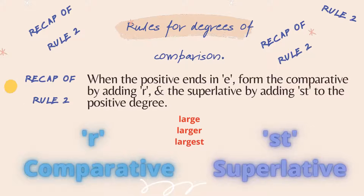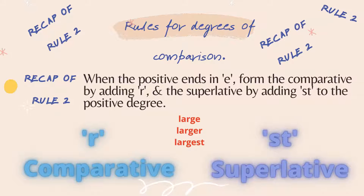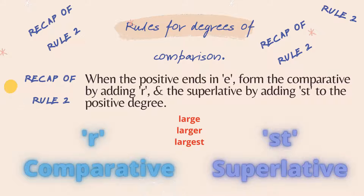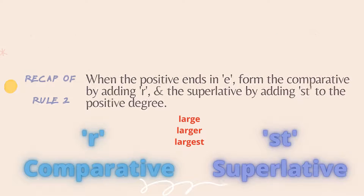Rule number 2: when the positive word ends in 'e' — like 'large' — you should form the comparative by adding 'r' and the superlative by adding 'st'. For example: large, larger, and largest.